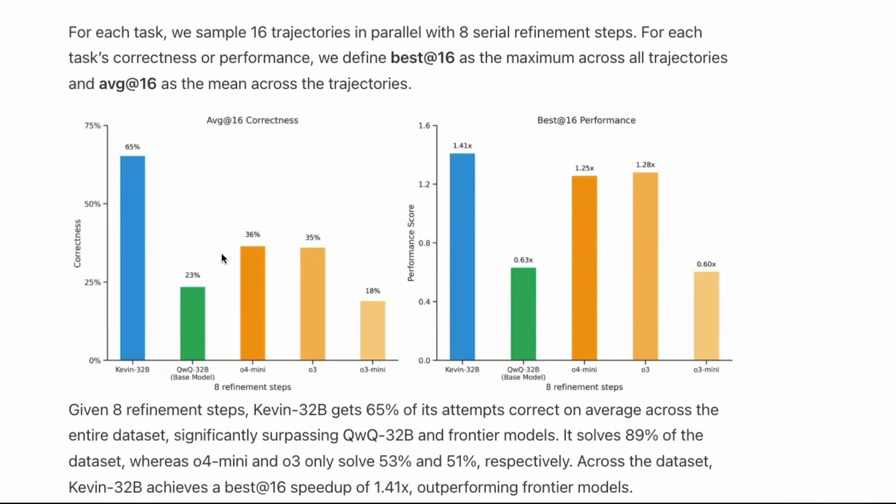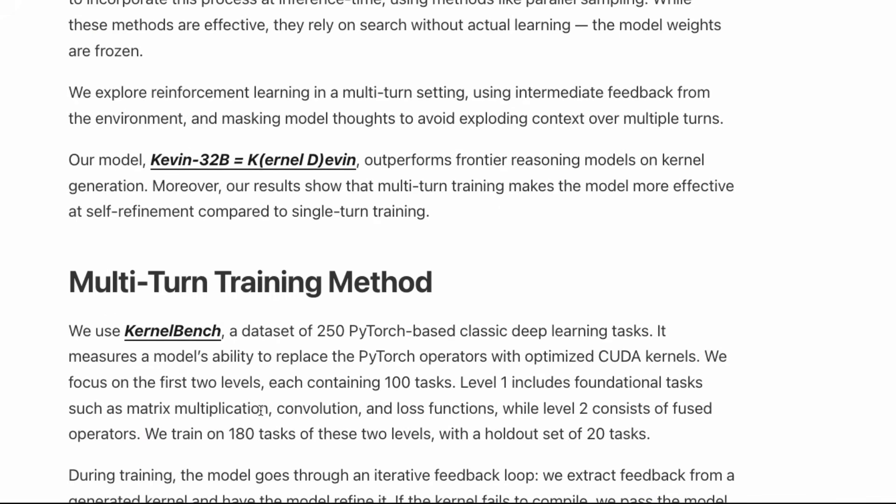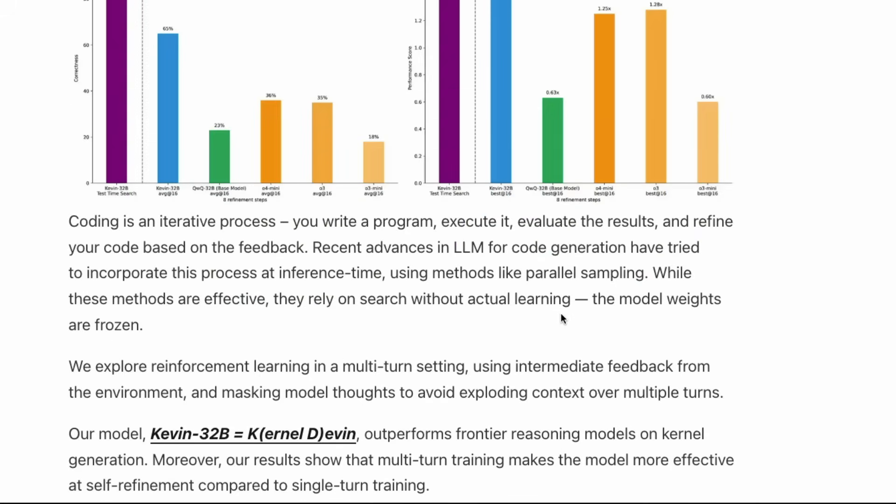The results are quite impressive. Kevin, the 32 billion parameter model, has scored 65 percent, and there's a big twist. O3, which is OpenAI's flagship model, has scored only 35 percent, and O4-mini has scored 36 percent. QwQ, which is Qwen's thinking model, a 32 billion parameter base model, has scored 23 percent. What's very interesting is that this Kevin is just a fine-tuned version of Qwen's 32 billion parameter model. They've literally taken Qwen 32 billion parameter model and fine-tuned it.